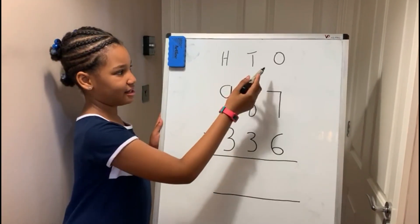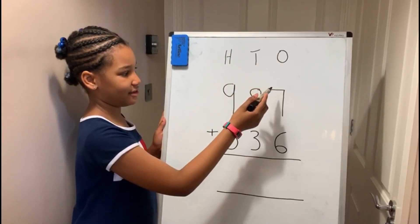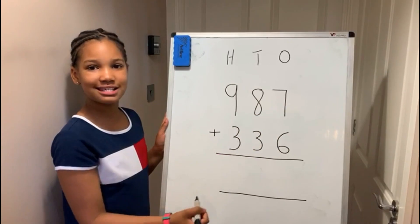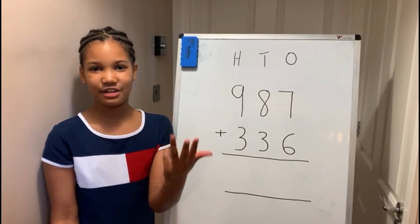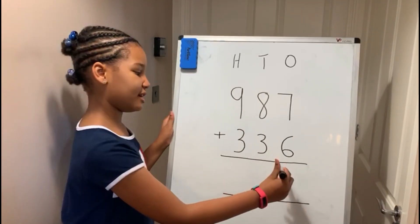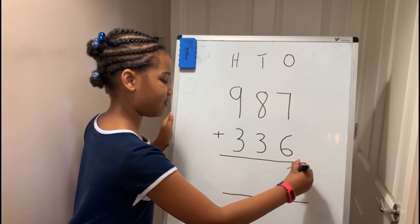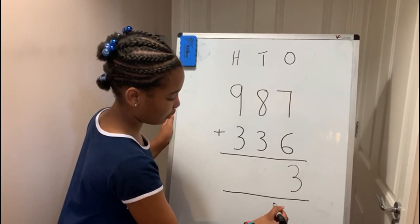Because we start at the ones, we do seven add six: seven, eight, nine, ten, eleven, twelve, thirteen. You can't write thirteen in the box, so you write the three and you carry the one over.